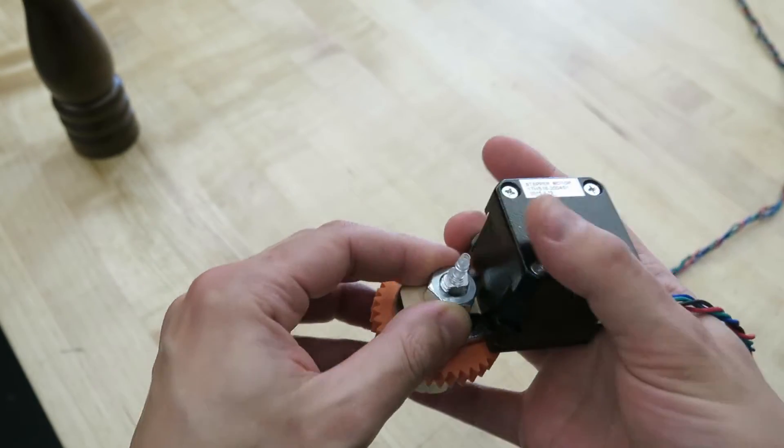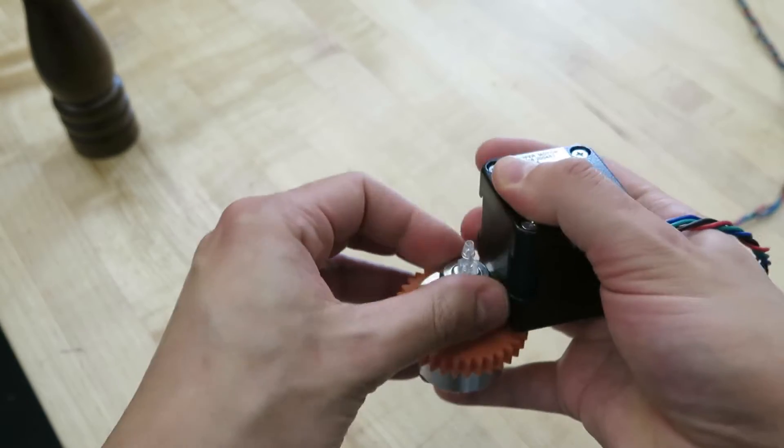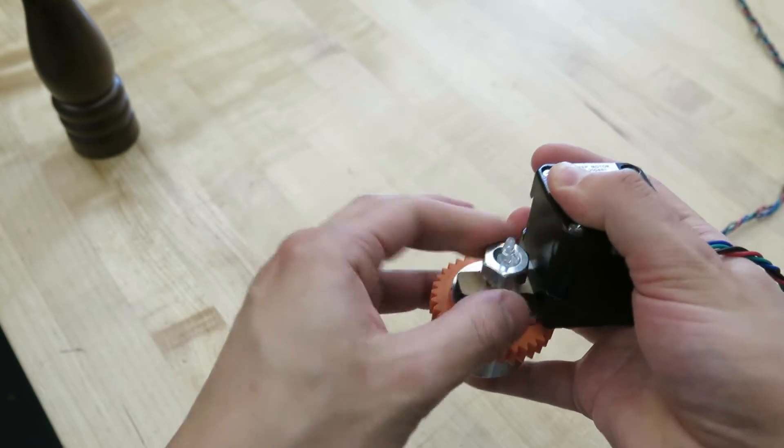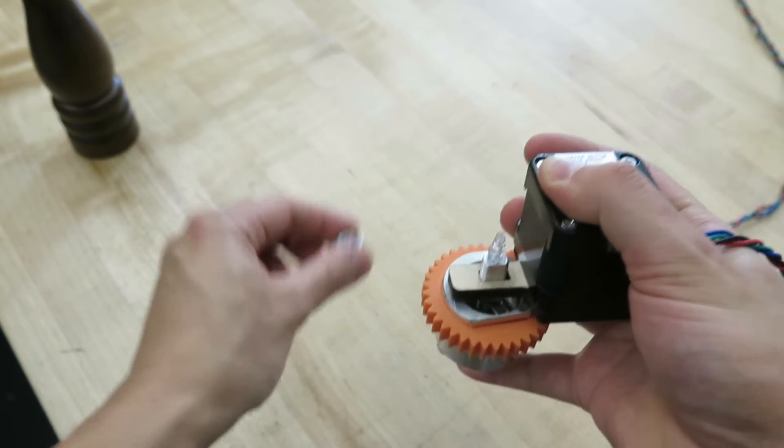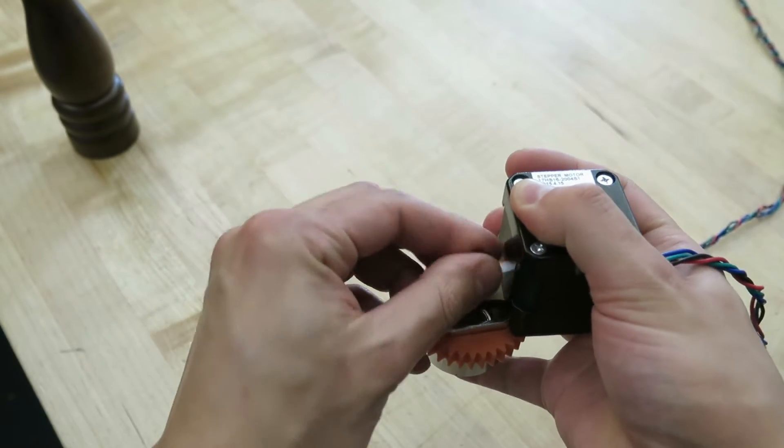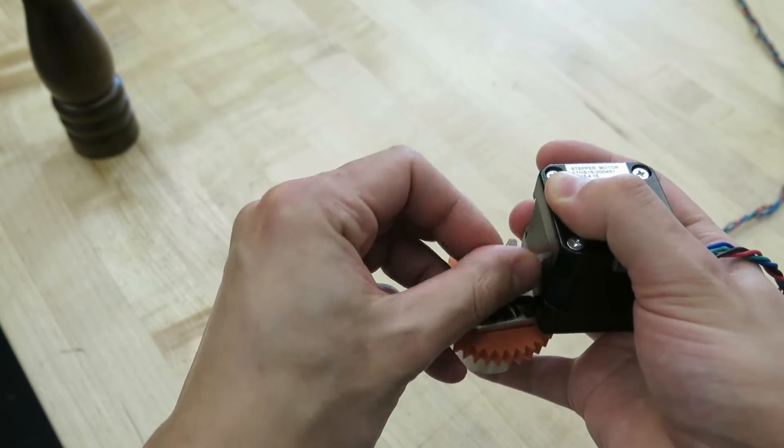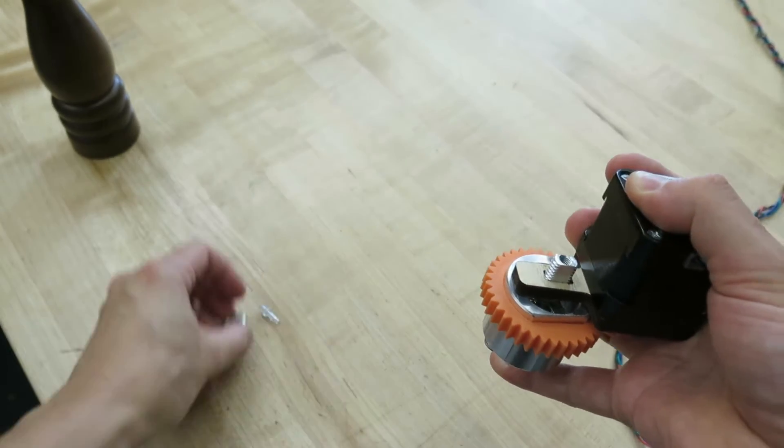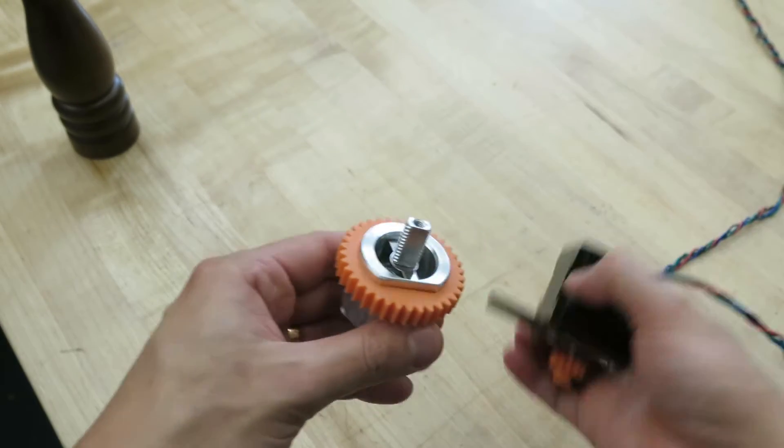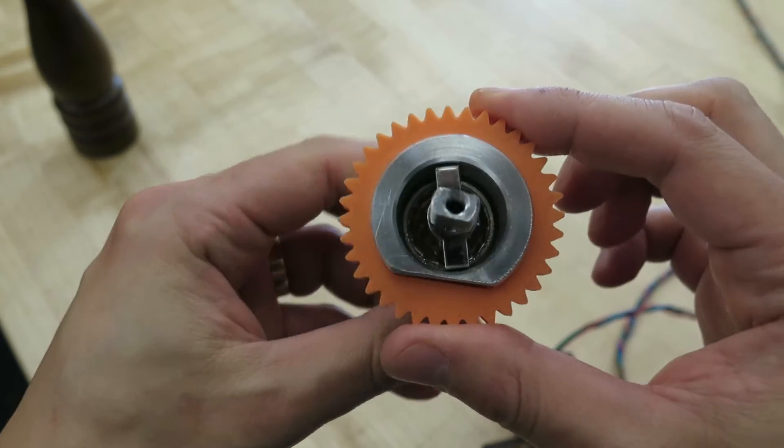So let me take it apart so that might help to understand how it works. First we need to remove the inlet for the nozzle and the nut that holds the shaft in place. And here is how it looks.